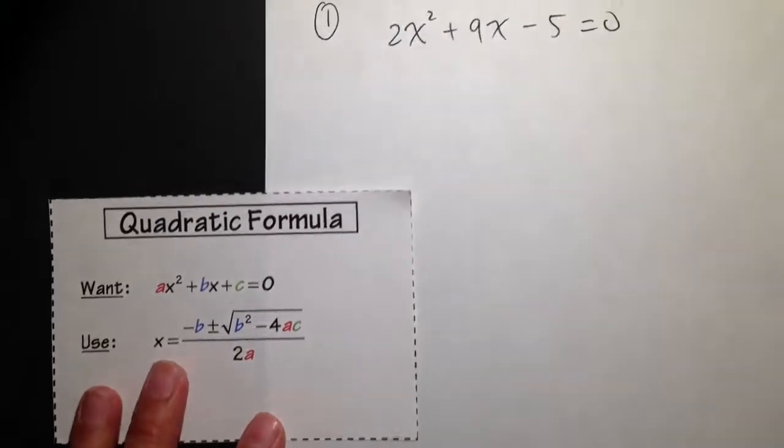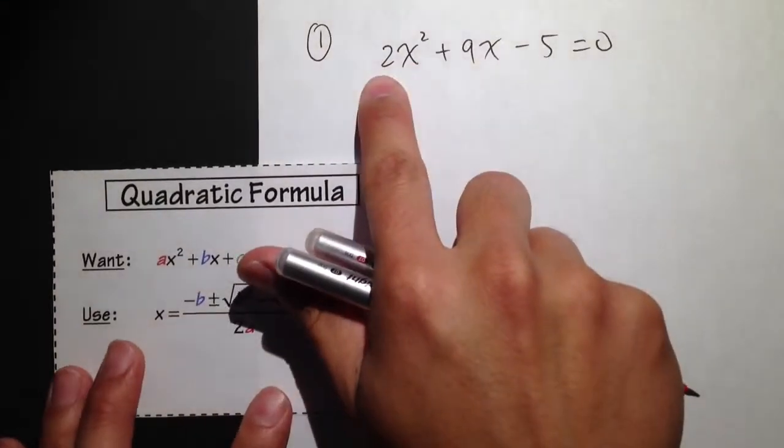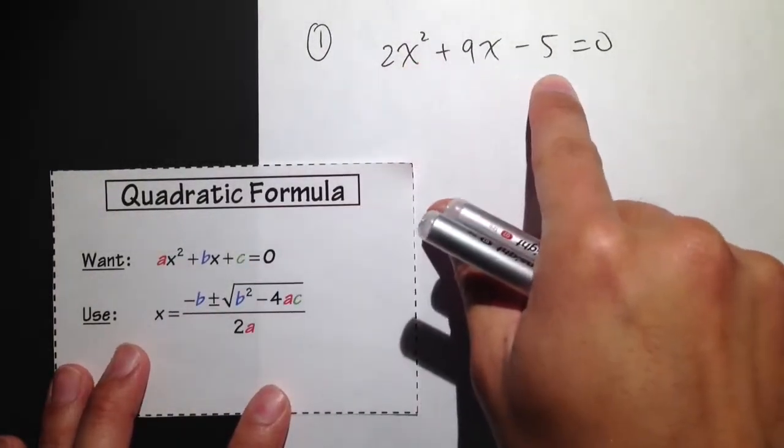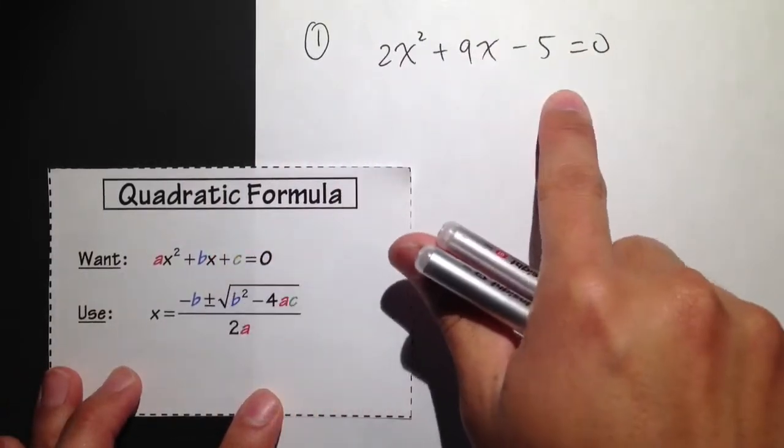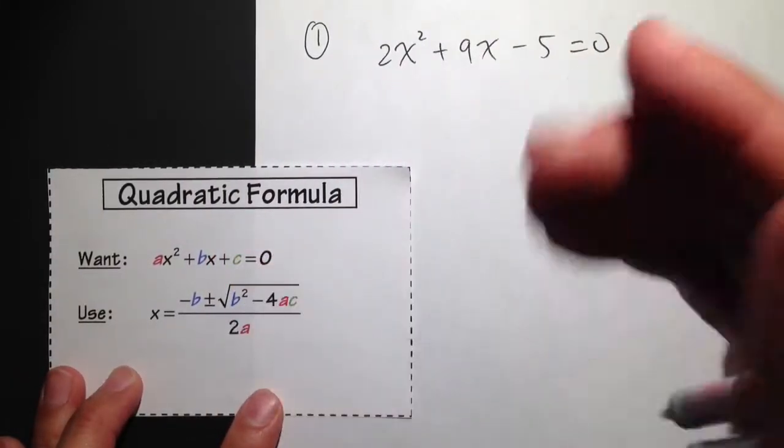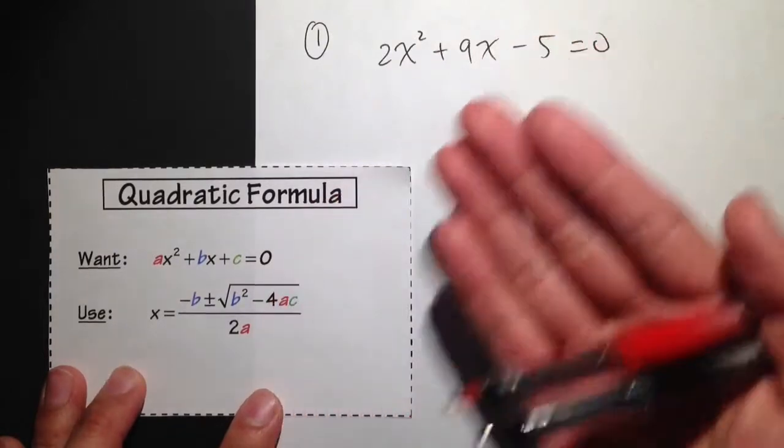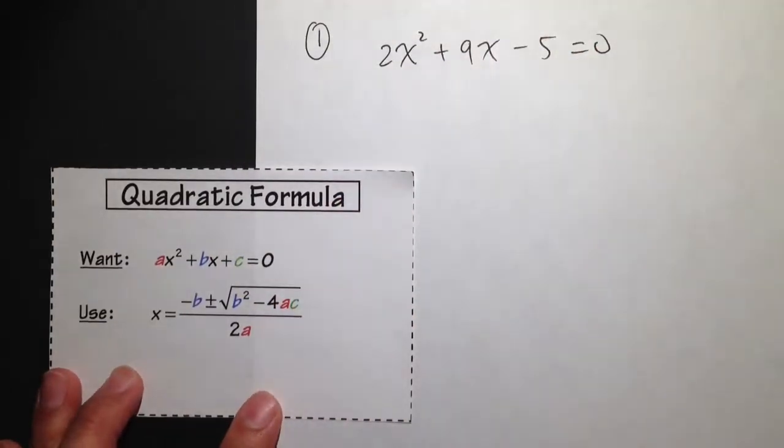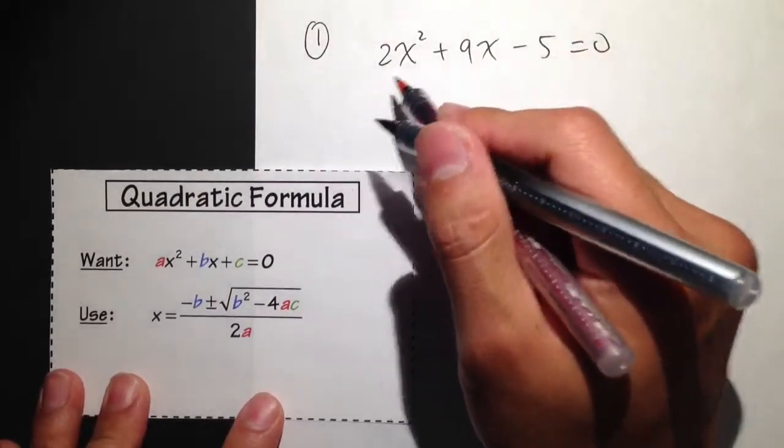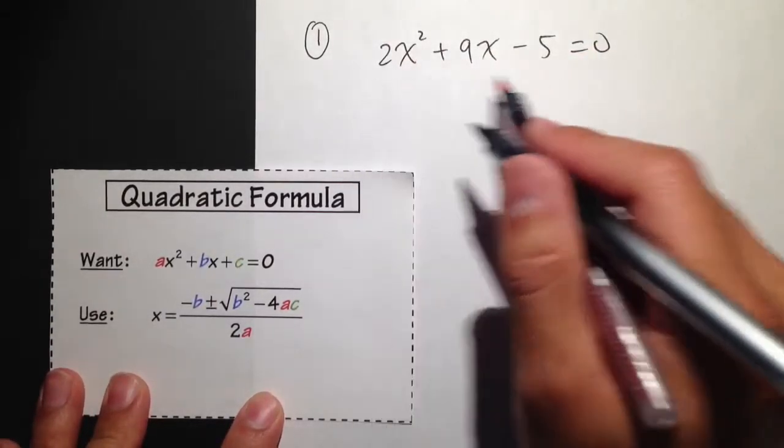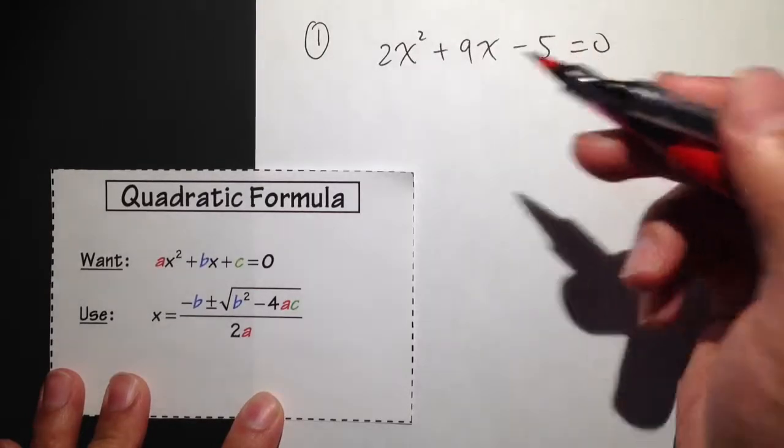So let's take a look at an example. Number 1: we are looking at 2x squared plus 9x minus 5 is equal to 0. And in fact, this equation is actually factorable, but I just want to demonstrate how this works, how to use the quadratic formula to work this out. The first step, you need to make sure that we have the equation in the standard form, and it's equal to 0. We have that.